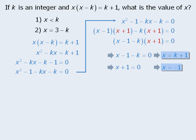So from the given equation we see that x could equal k plus 1, or it could equal negative 1. Notice that one solution here depends on the value of k, and the other solution does not depend on the value of k. This is very important to answering the question.